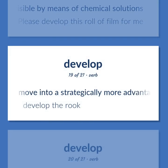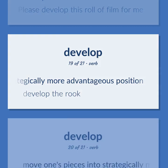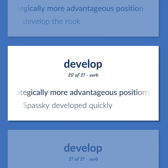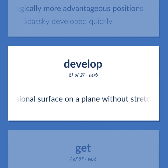Develop: Move into a strategically more advantageous position — develop the rook. Move one's pieces into strategically more advantageous positions — Spassky developed quickly. Superimpose a three-dimensional surface on a plane without stretching, in geometry.